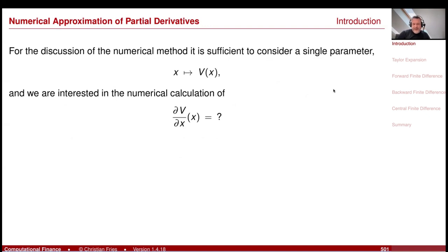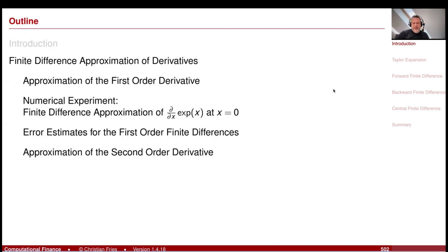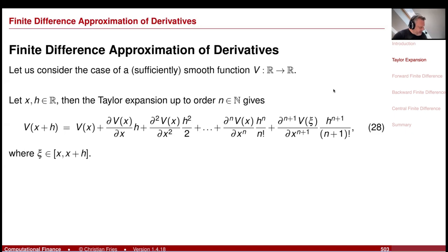For the discussion of the numerical methods, it is sufficient to consider just a single parameter x that enters into my function V, and we are interested in the derivative of V with respect to x. We will derive the finite difference approximation. All is based on the Taylor expansion — assume a sufficiently smooth function V, a parameter x, and a shift size h.